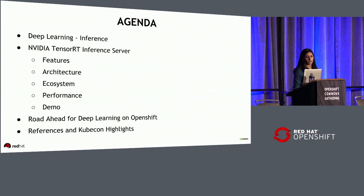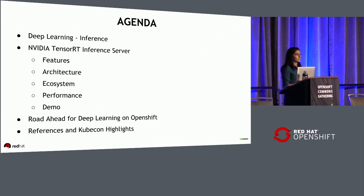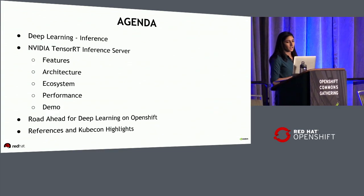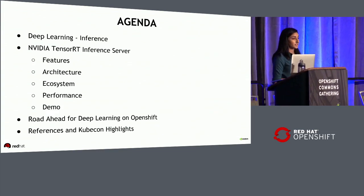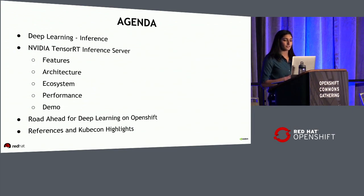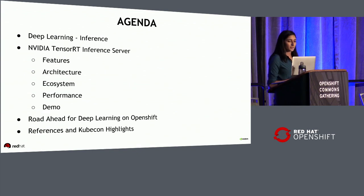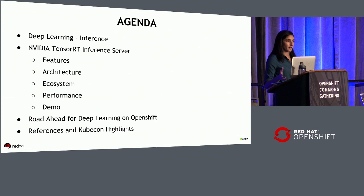So this is just a quick agenda. I'll start off with a brief overview of what deep learning is and focus more on the inference side. Then I'll jump into the NVIDIA TensorRT inference server, which was announced in September — fairly new. I'll go into the features, the internal architecture, where it fits into the larger inference ecosystem. I have one quick performance slide, and then I'll jump into a demo. Then I'll pass it back to Tushar to talk about OpenShift and Kubernetes.